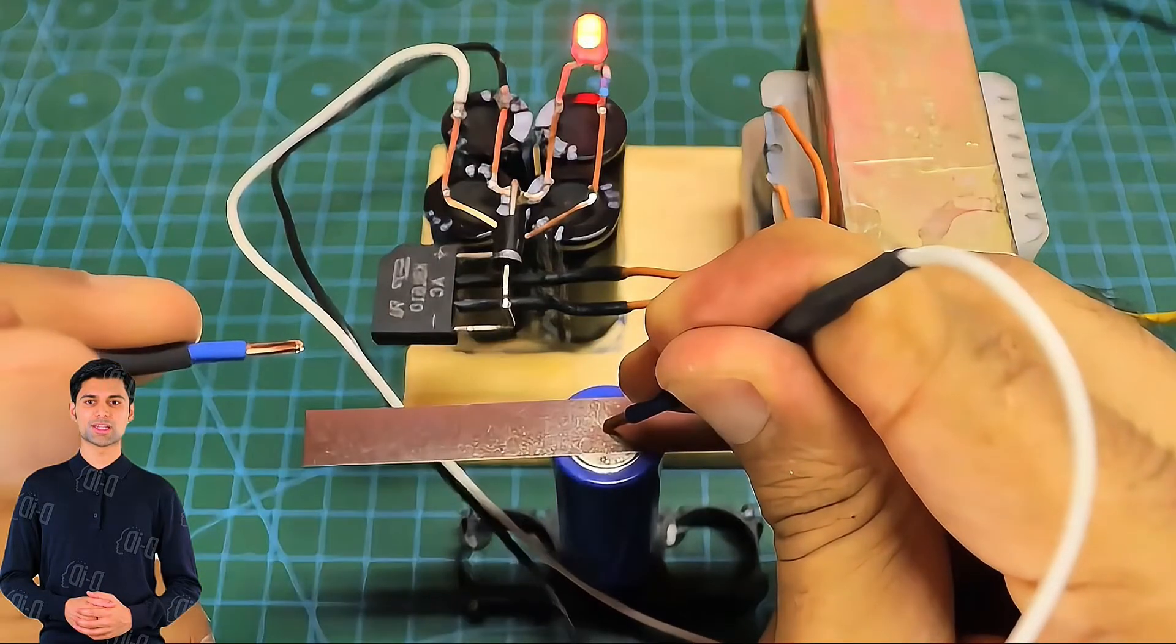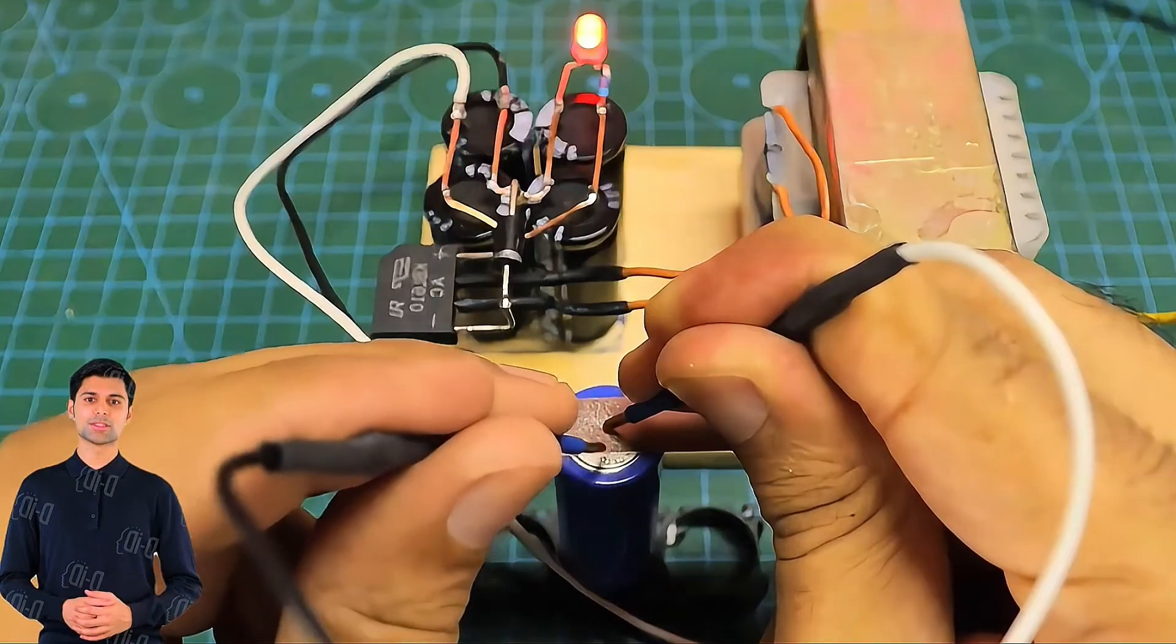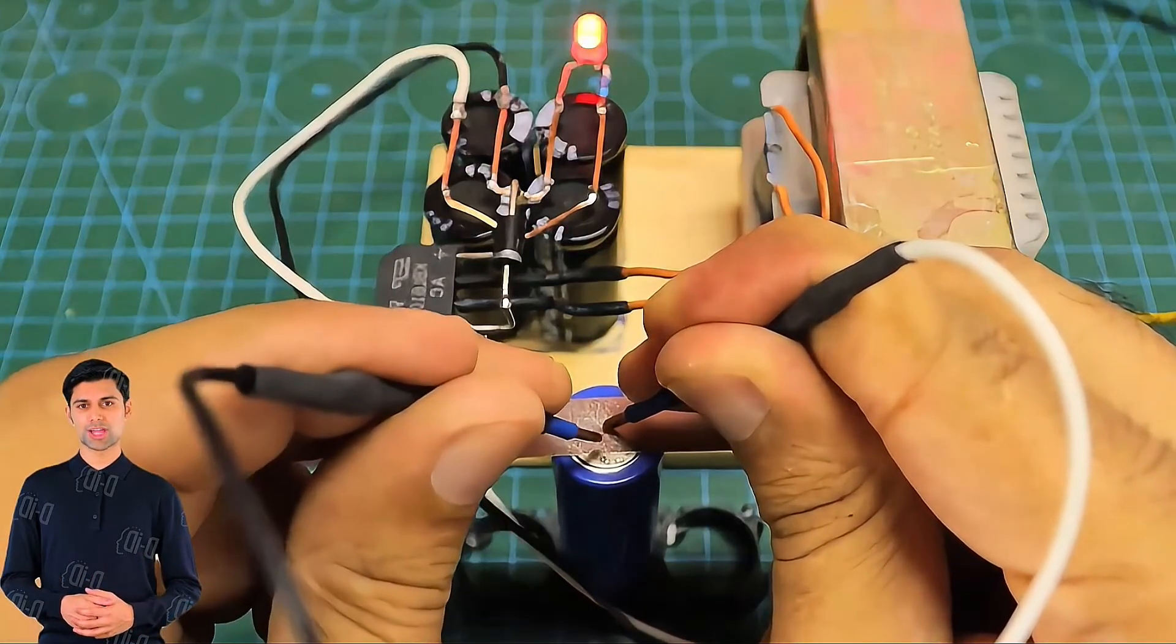If you also have an idle transformer, you can also DIY a spot welding machine by yourself.